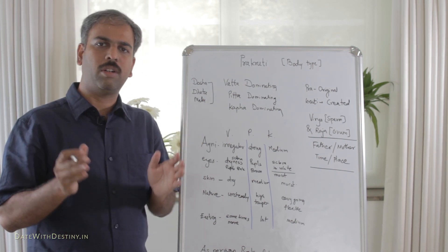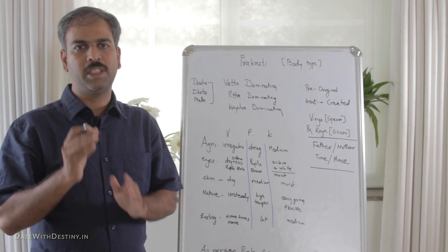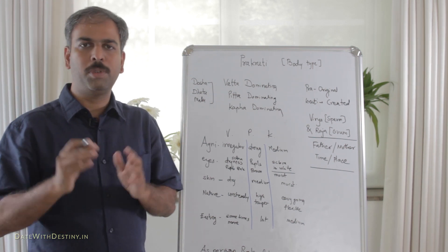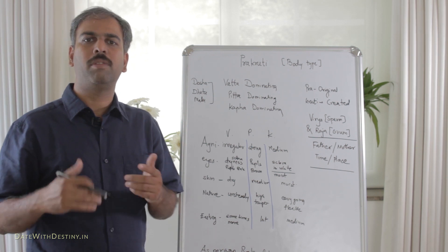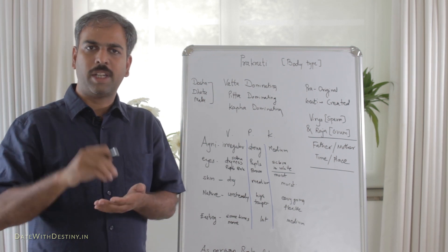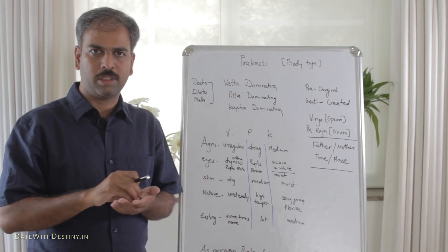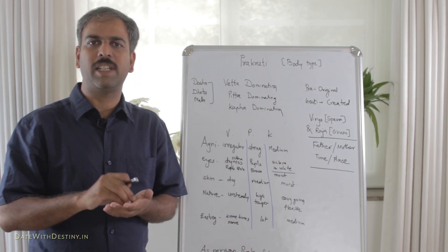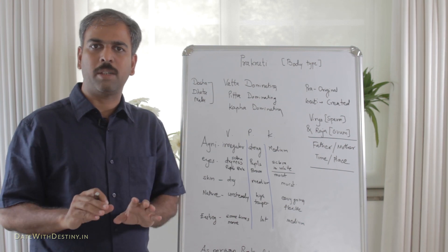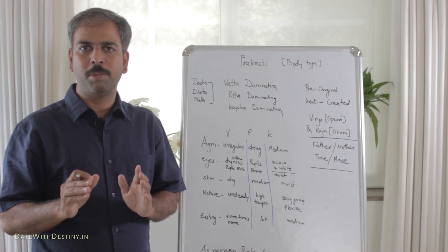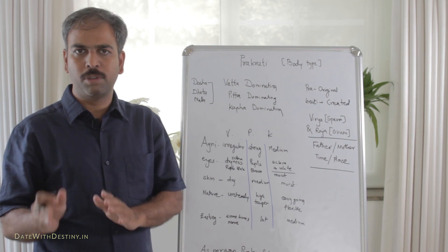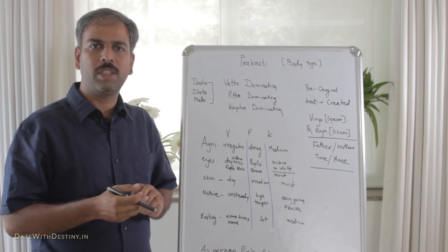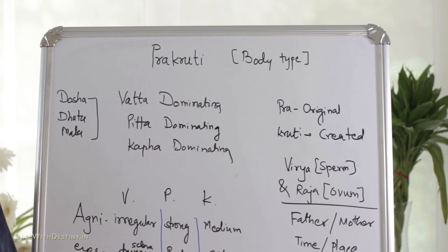These three Doshas are always trying to dominate each other, and one Dosha is more prominent than the other two. Obviously they are working together, but one is dominant. The time of creation of the person, that is, when the embryo is formed after fertilization of the ovum, at that time, the Dosha which is more dominant is called the Prakruti of that person. It may be Vata Prakruti, Pitta Prakruti, or Kapha Prakruti.